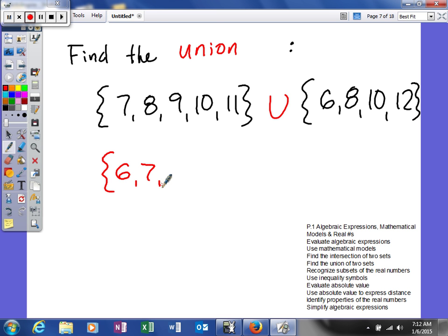So 6, 7, 8, 9, 10, 11, and 12 will be the union of those two sets. So when you put them together, those are all the numbers that are encompassed by that union.